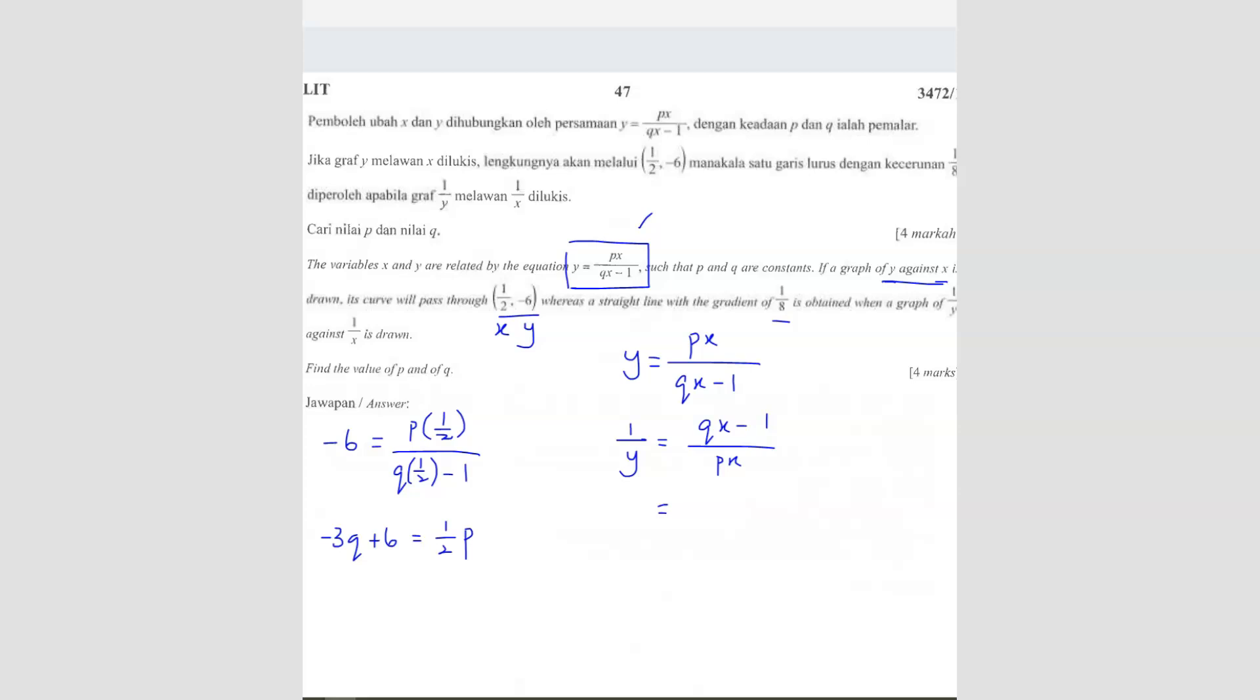I will get 1 over y equals to qx minus 1 over px. Now here, I can break it apart. I can break it like this, qx over px minus 1 over px. So here I can cancel out. So my equation is going to be 1 over y equals to q... I'm going to write this one in front because later you'll know why. So negative 1 over p